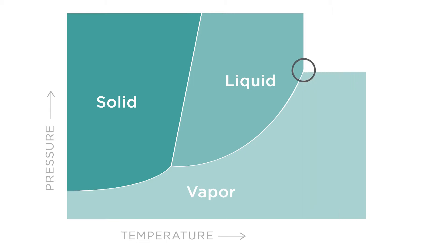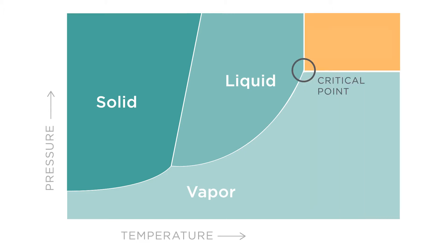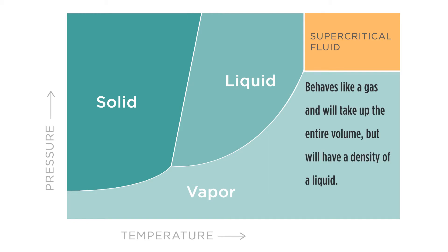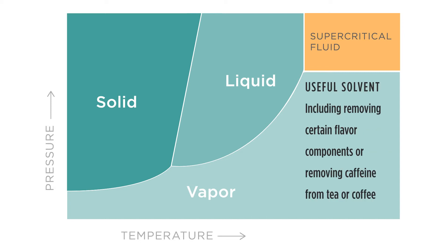The other key feature is the critical point. There is a certain temperature where, no matter what the pressure is, a substance will just be a gas. There is also a pressure that will only allow a certain density. This gives us supercritical fluids, where we have something that behaves like a gas in that it takes up the entire volume, but has the density of a liquid. Supercritical CO₂ has become a very useful solvent, including for removing certain flavor components or removing caffeine from tea or coffee. The critical point is that critical temperature and critical pressure point.